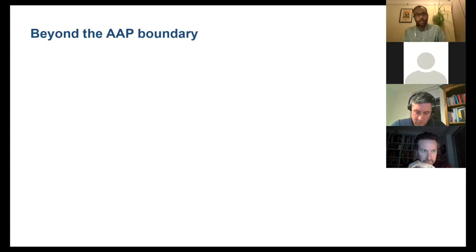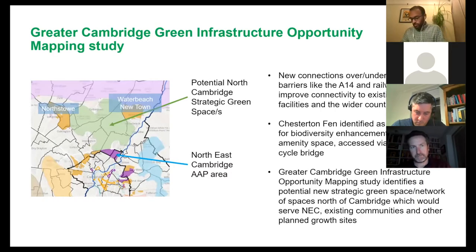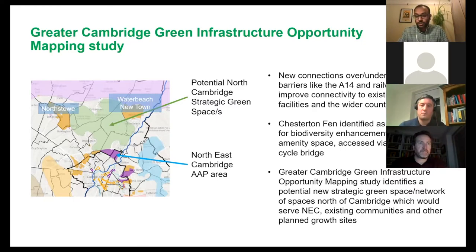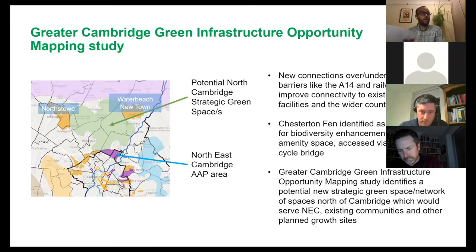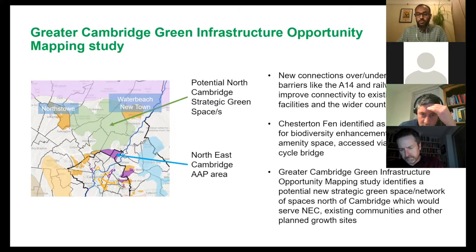Beyond the AAP boundary — which is a very tight red line — some issues go beyond it and form part of the local plan process. One of those is bringing forward new large green spaces to support the health and wellbeing of both new and existing residents. This includes a large green area north of Cambridge stretching up to North Stowe and Water Beach, as well as Chesterton Fen between North East Cambridge and the river corridor. Since the majority of new homes won't come forward until after 2041, there is time for these new open spaces to come forward alongside the completion of new homes.